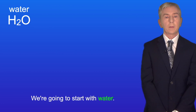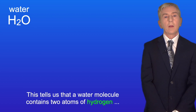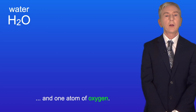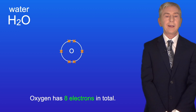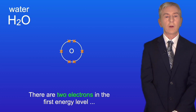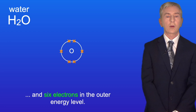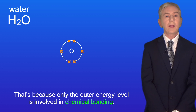We're going to start with water. Water has a formula H₂O, which tells us that a water molecule contains two atoms of hydrogen and one atom of oxygen. I'm showing you an atom of oxygen here. Oxygen has eight electrons in total — two electrons in the first energy level and six electrons in the outer energy level. Notice that I'm only showing the outer energy level, because only the outer energy level is involved in chemical bonding.